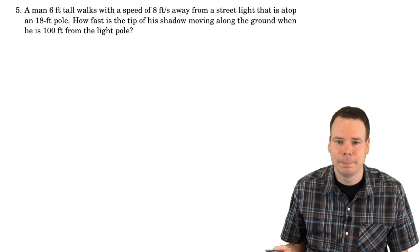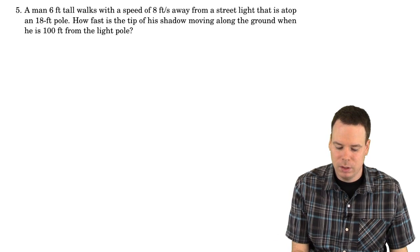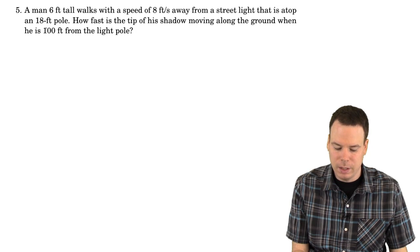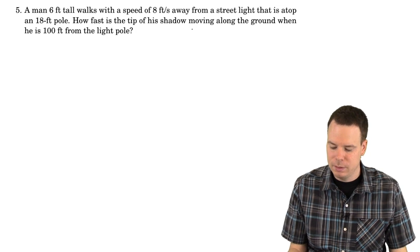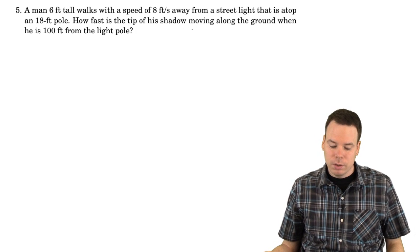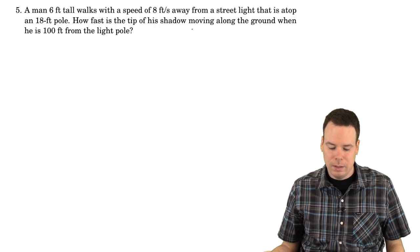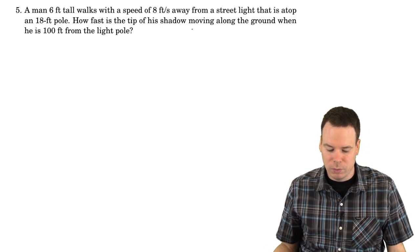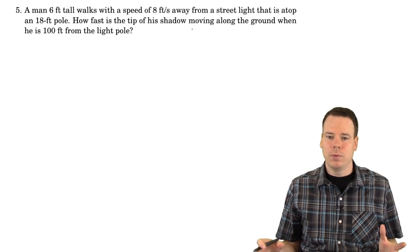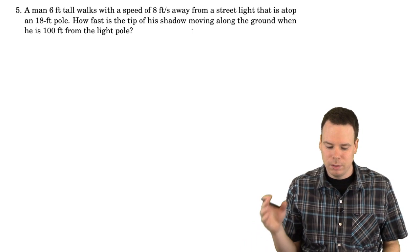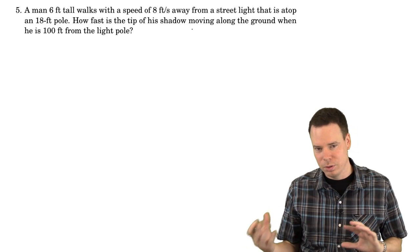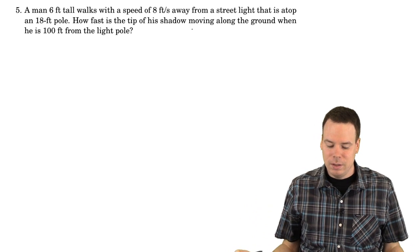Let's have a look at another related rates problem. We have a 6-foot-tall man walking at a speed of 8 feet per second away from a street light on top of an 18-foot pole. How fast is the tip of the shadow moving along the ground when he is 100 feet from the light pole? This is a classical related rates problem involving a man walking away from a lamppost.